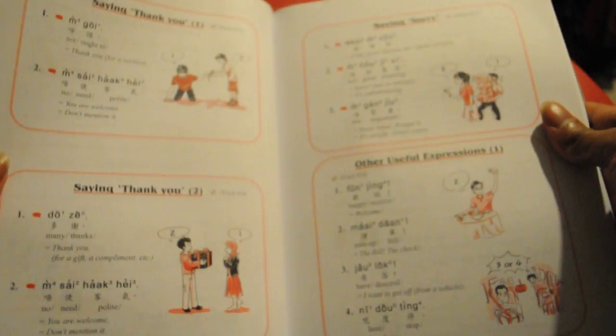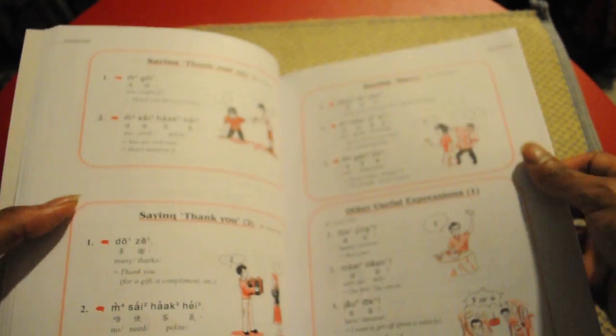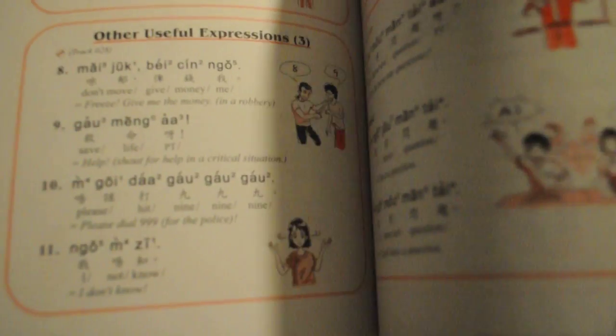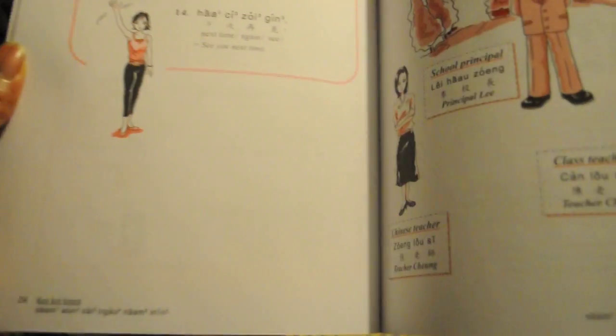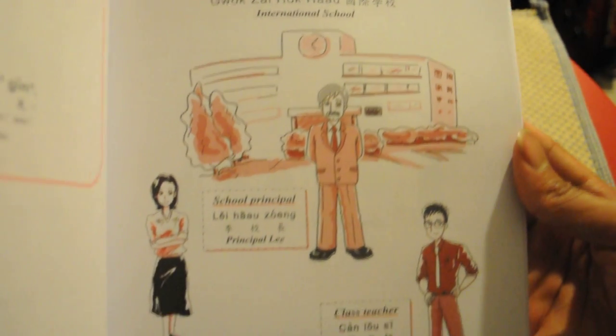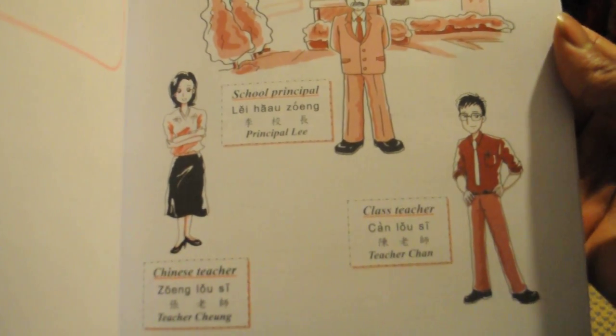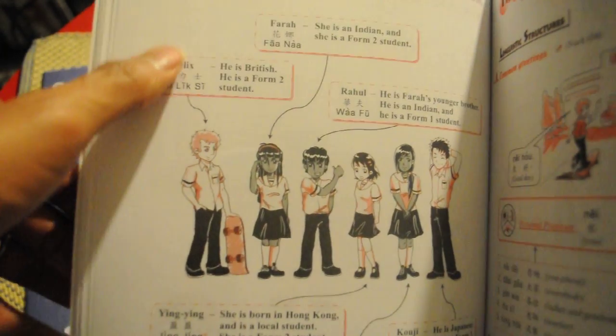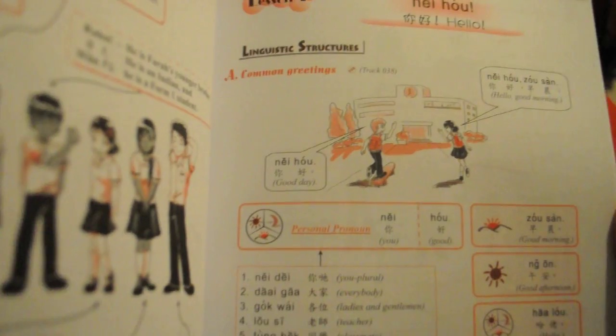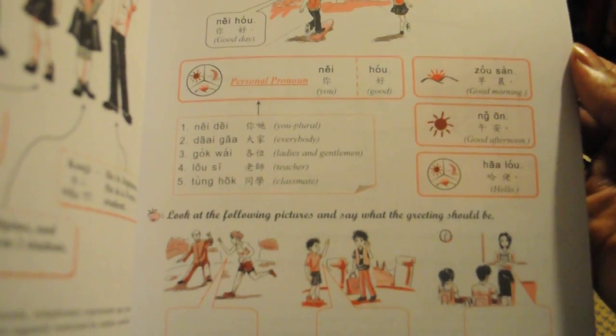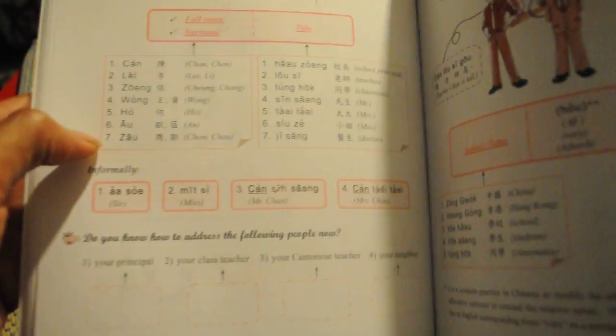Basically you have your dialogues, useful expressions, and they included some characters there, a bunch of characters. Main character in the conversation: school principal, Chinese teacher, class teacher. It's very interesting. Then you have your students.